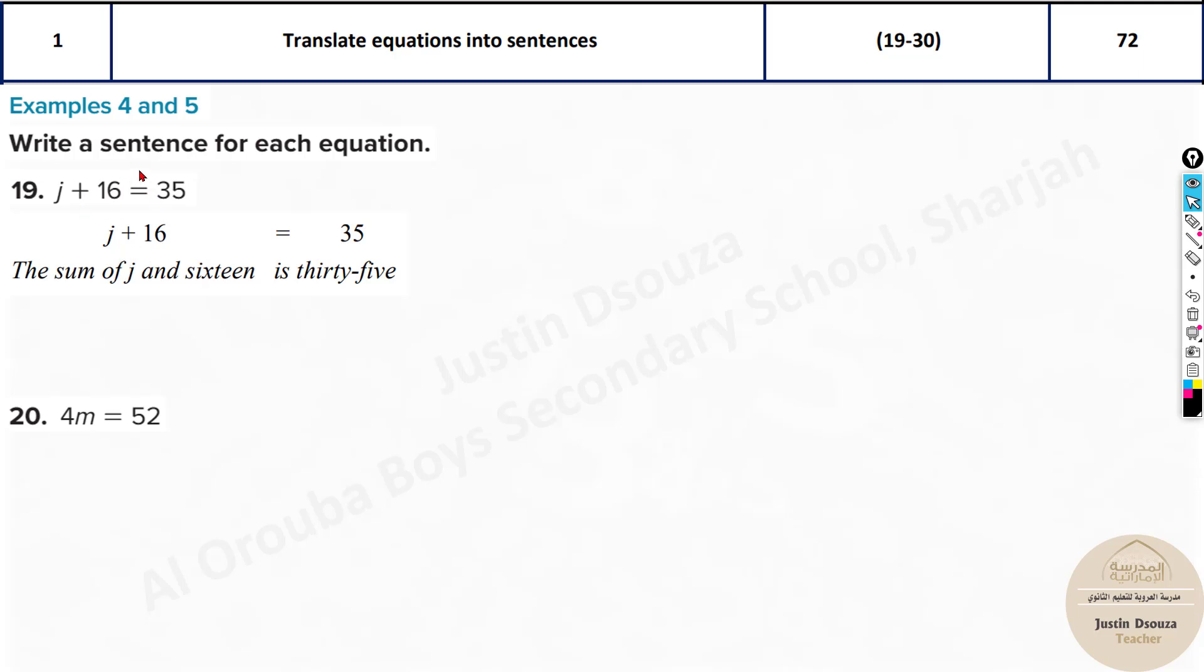And this is just J, the sum of J and 16. This is correct. Now I will write one more answer: J added to 16. This is also possible. J added means plus 16 is same as 35. So this is also correct, but it depends on which option you have.